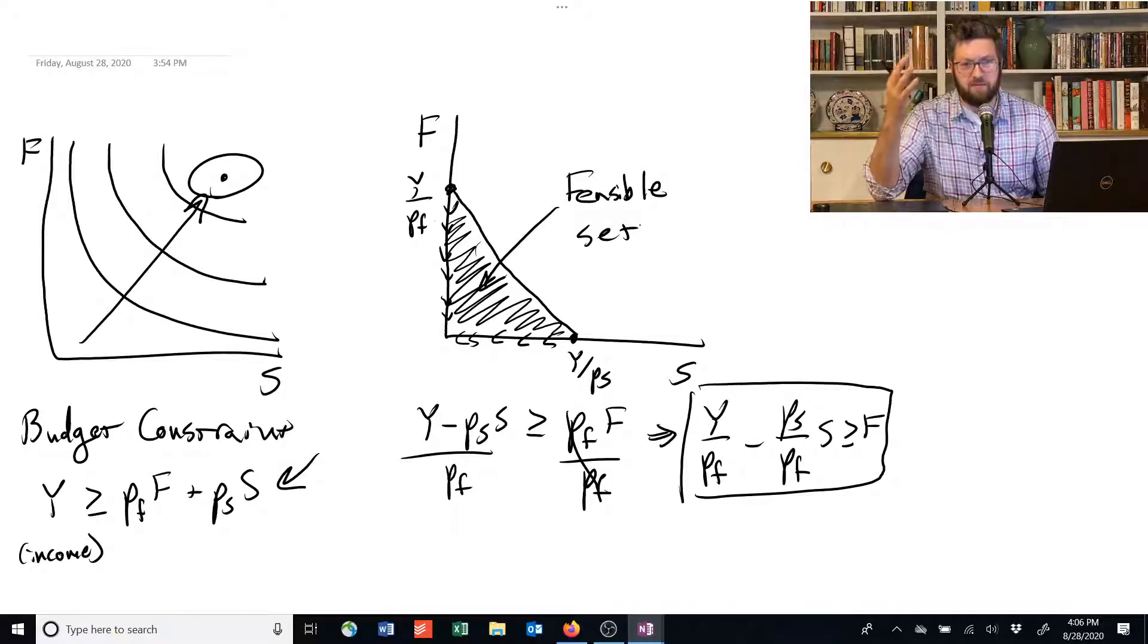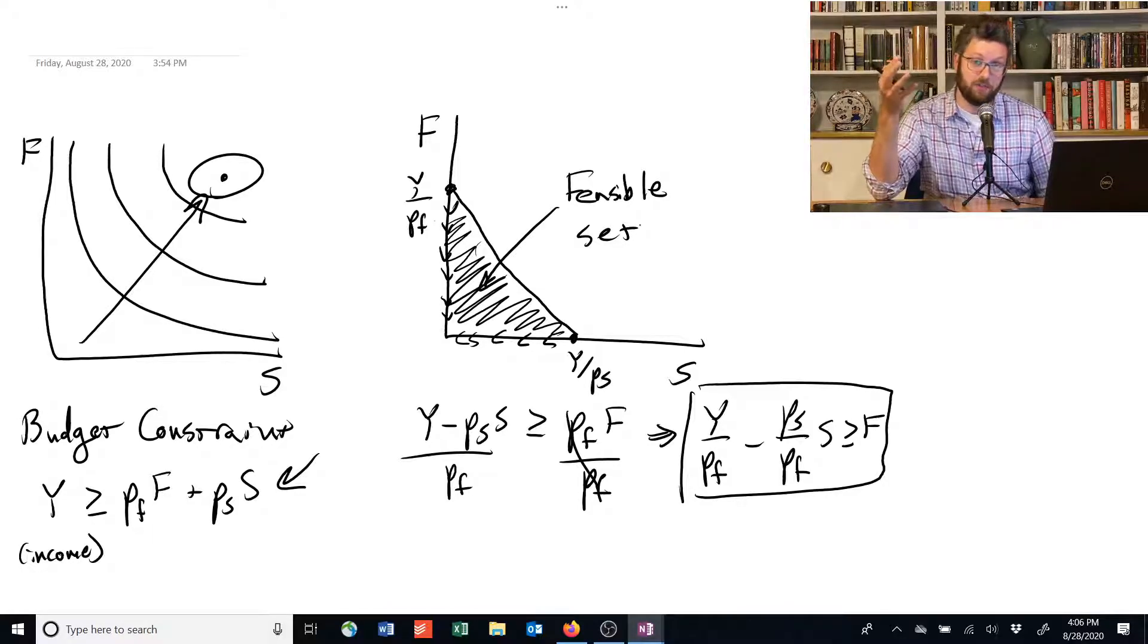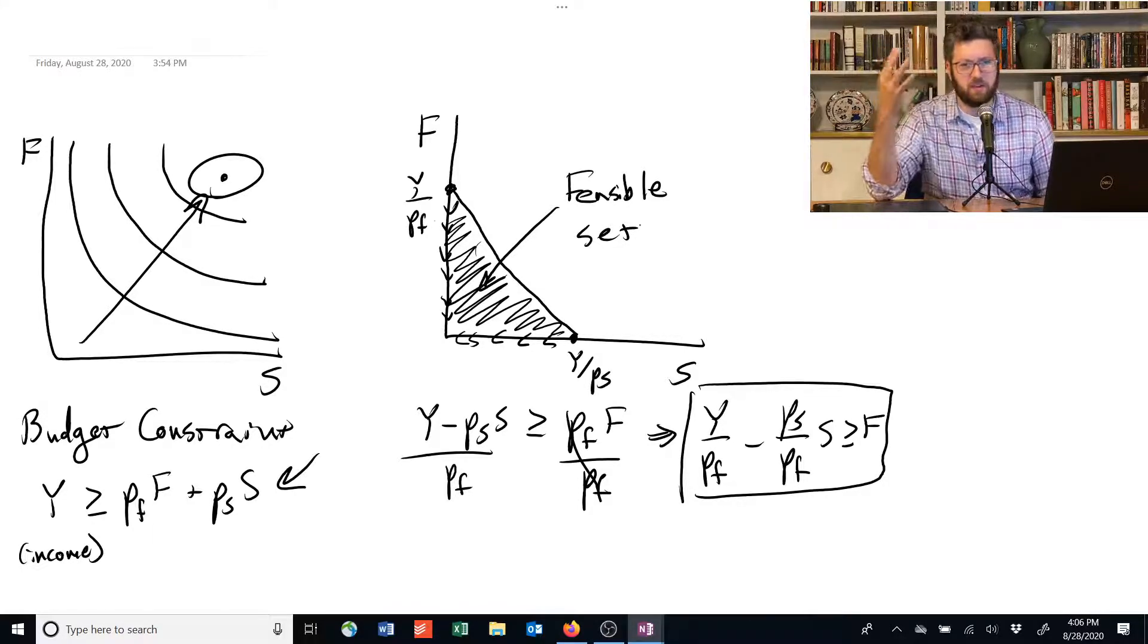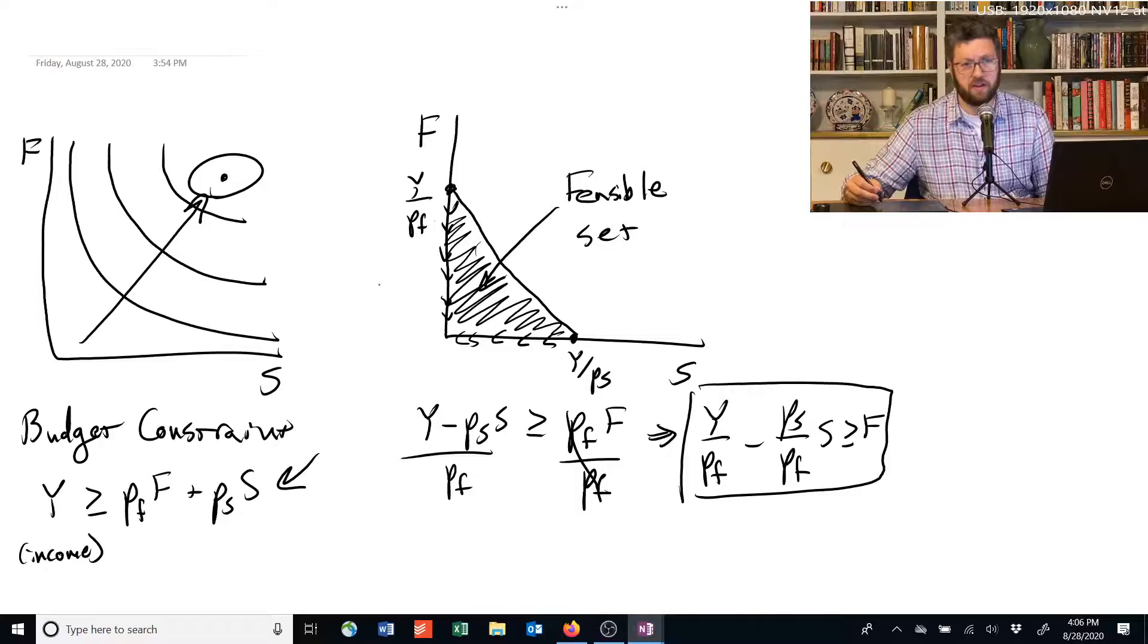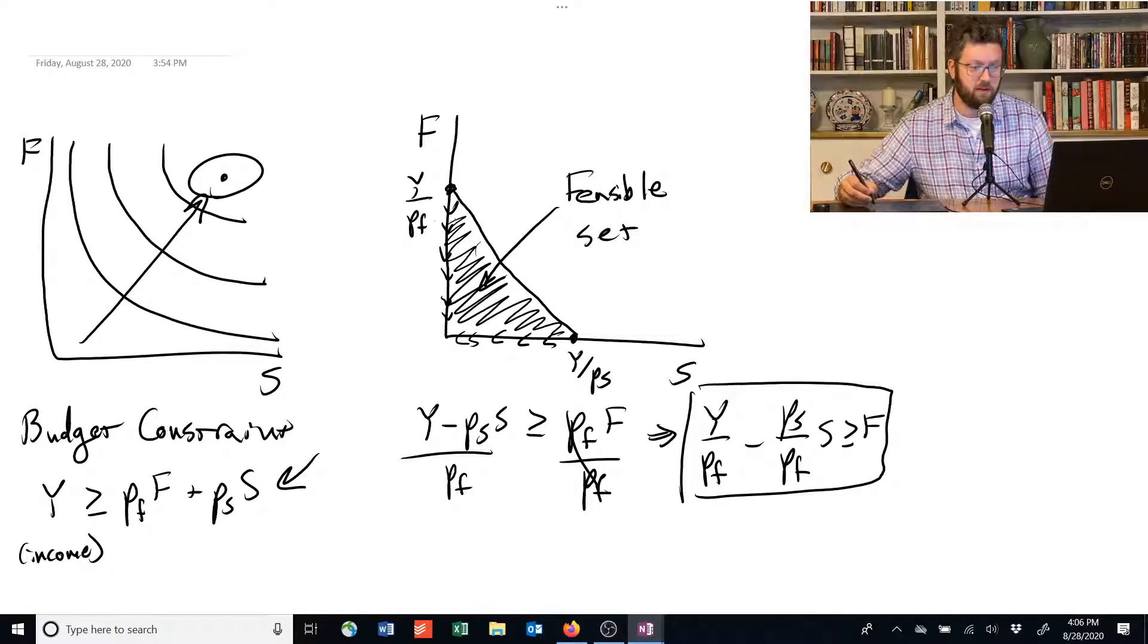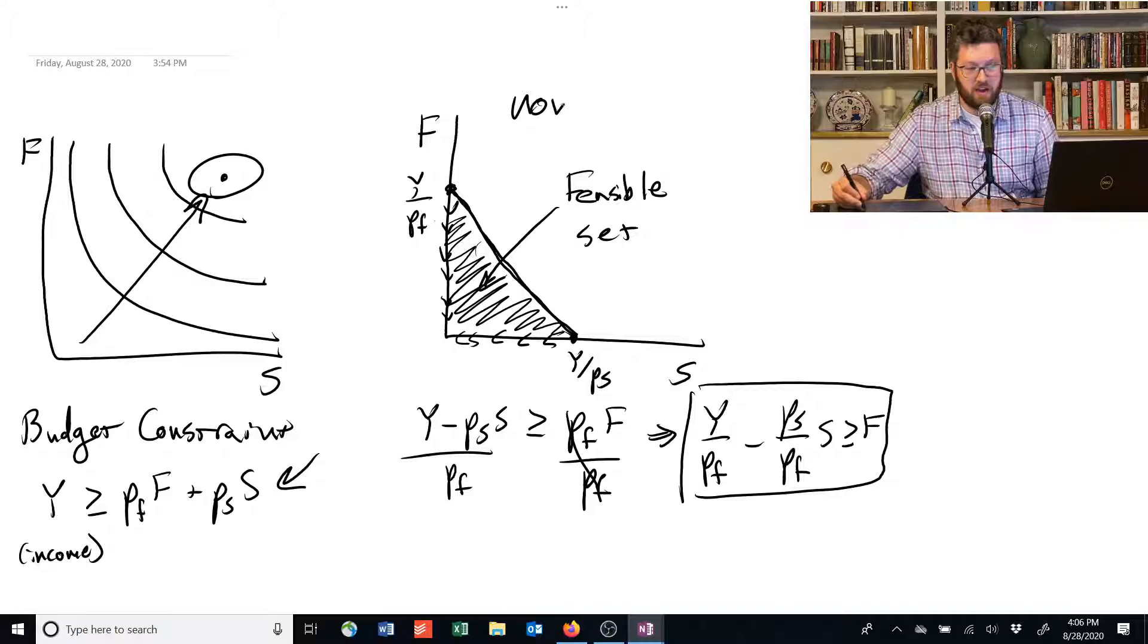So they have to choose from among this set, which one they are going to buy. And one thing that we can say without knowing anything else about their preferences, is that if food and shelter are the only things that this person cares about, then they're going to be on this line instead of in this shaded area. And that's because of non-satiation.